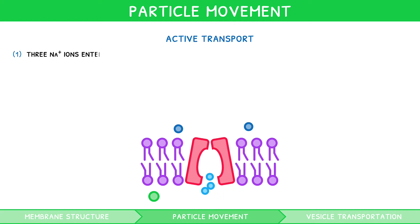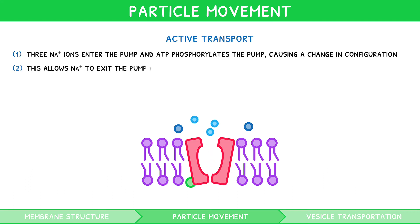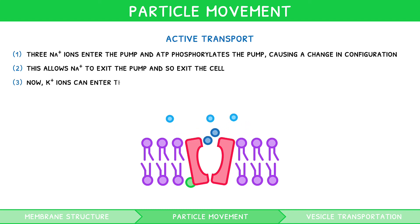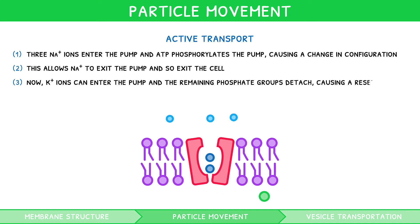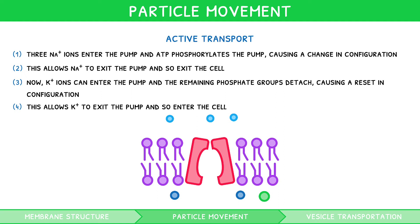Three sodium ions enter the pump, and ATP phosphorylates the pump, causing a change in configuration. This allows the sodium to exit the pump and so exit the cell. Now potassium molecules can enter the pump, and the remaining phosphate groups detach, causing a reset in configuration. This allows the potassium to exit the pump and so enter the cell. You can obviously use any example of active transport, but this is a good example as it comes up later in the syllabus.